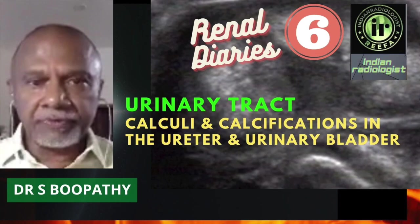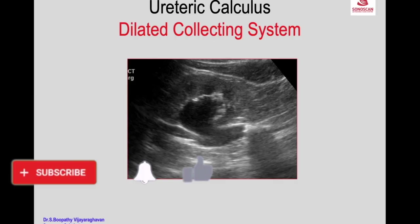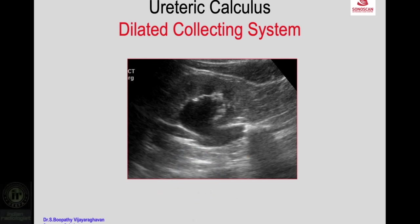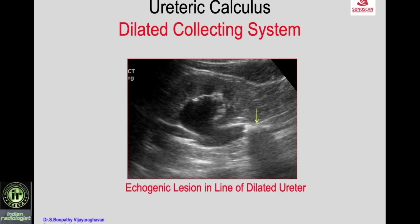Sonography of calculi and calcifications of the urinary tract, part 2: ureter and urinary bladder. Whenever there is a dilated collecting system or hydronephrosis, you can trace the pelvis and the ureter to see the level, and when this calculus is the cause of obstruction, it may be seen as an echogenic lesion in the line of the dilated ureter with acoustic shadow, which is typical of a ureteric calculus.